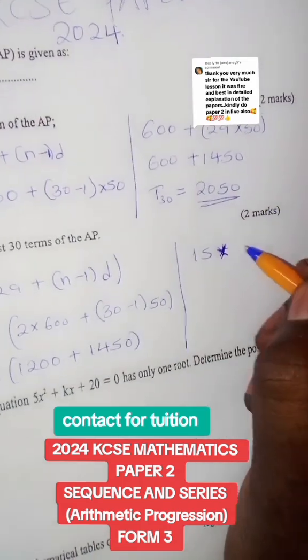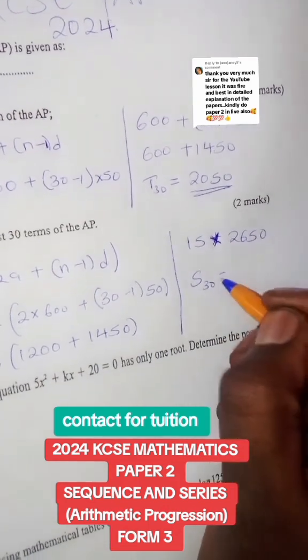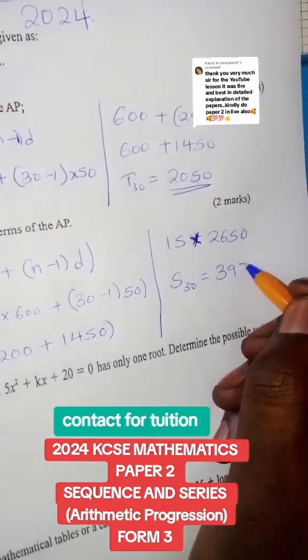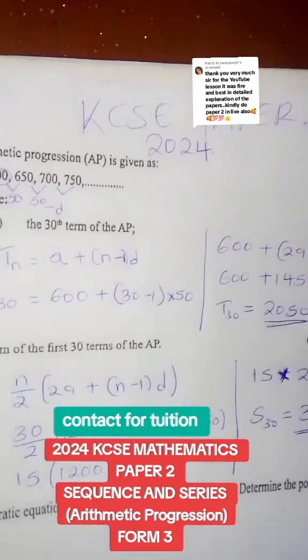1200 plus 1450, that is 2650. Therefore, the sum of the 30th term will give me 39,750. That is how the first question was supposed to be solved.